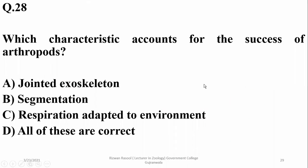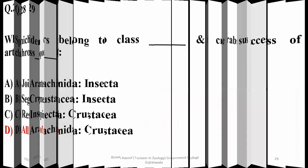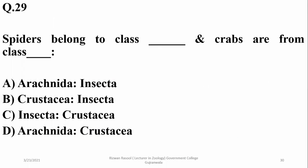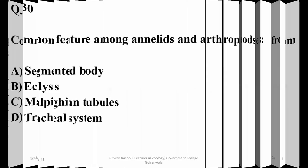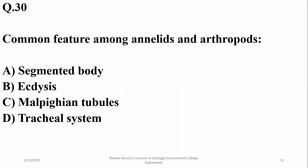Question twenty-two: the characteristics that account for the success of arthropods include jointed skeleton, segmentation, and respiration adapted to the environment. Spiders belong to class Arachnida, while crabs are crustaceans — right option is delta. The common feature between annelida and arthropods is the segmented body — so alpha.